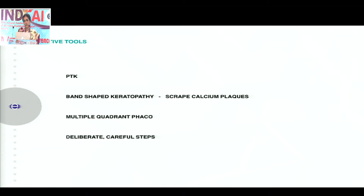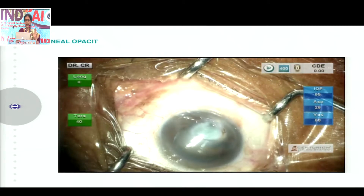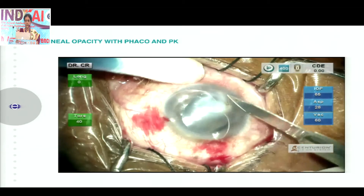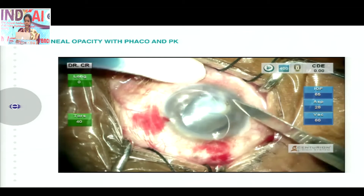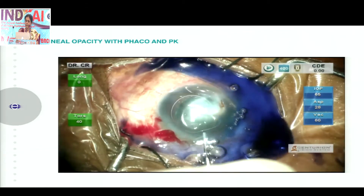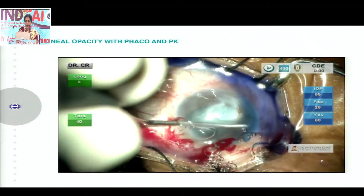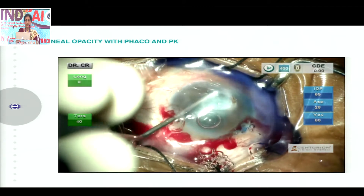You could do a PTK to make thicker opacities thinner, or you could scrape the calcium plaque in a band-shaped keratopathy. But essentially the surgery has to be done very carefully. This case was planned for a PK. Sometimes just a mechanical debridement might thin out the area of opacity so that you are able to visualize a bit below.